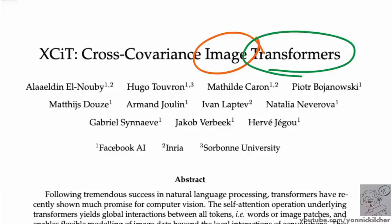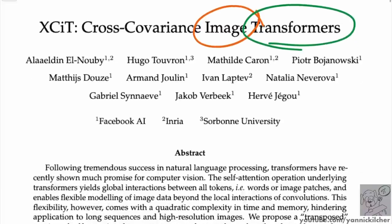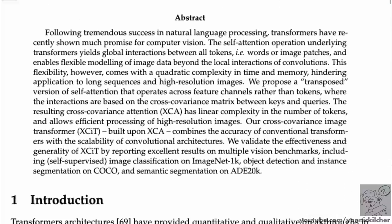It just has one dynamic part in it — one of the convolutions is a dynamic convolution. But this could be a good architecture for future image processing.